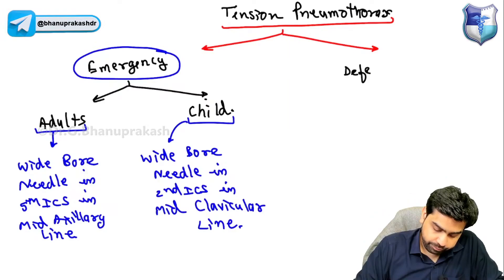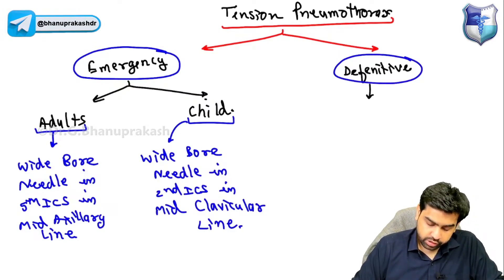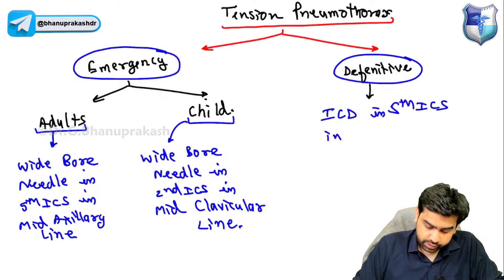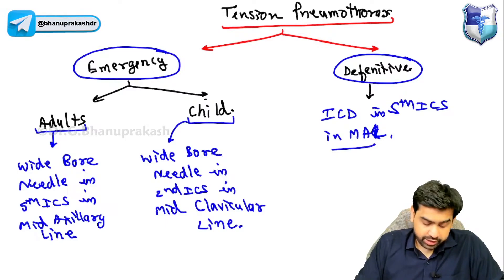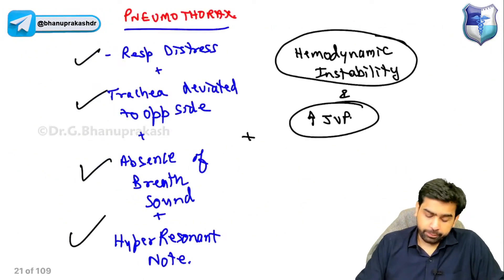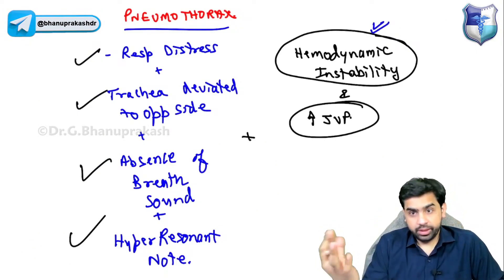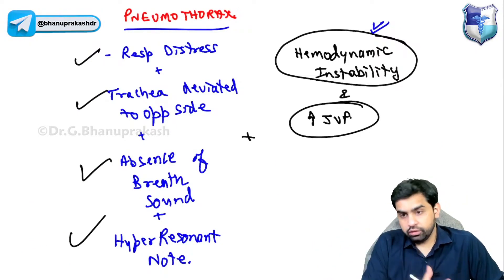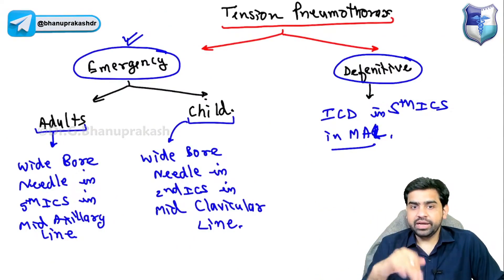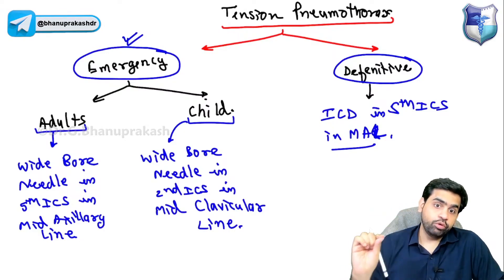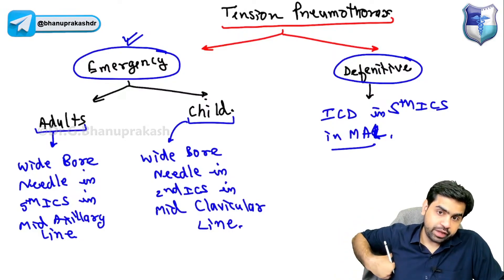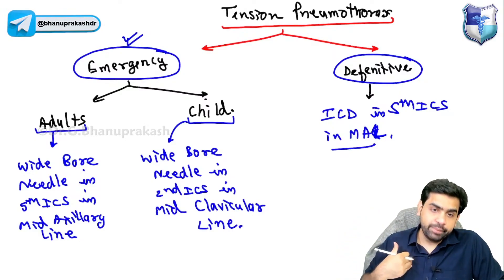The definitive management is insertion of an intercostal drain (ICD) in the fifth intercostal space in the mid-axillary line. Emergency management is needed first because in tension pneumothorax the patient is in hemodynamic instability — if not managed within minutes, the patient may not survive. Insertion of an ICD takes more time, so in the emergency situation you put a wide-bore needle: in adults in the fifth intercostal space mid-axillary line, in children in the second intercostal space mid-clavicular line.